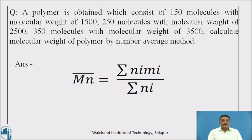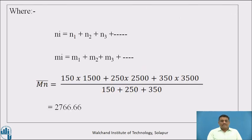One more practice numerical: A polymer consists of 150 molecules with molecular weight 1500, 250 molecules with molecular weight 2500, and 350 molecules with molecular weight 3500. Using the formula M̄ₙ = Σ(nᵢMᵢ) / Σ(nᵢ), substituting the values gives M̄ₙ = 2766.66.